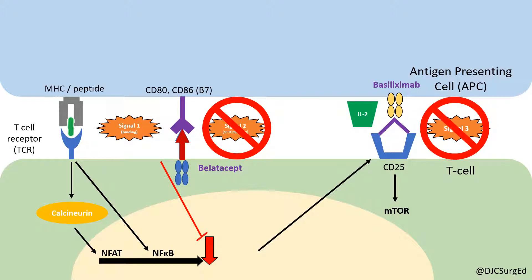Finally, leukocyte depletion strategies use antibodies such as thymoglobulin, which are designed to bind peripheral alloreactive lymphocytes and create a window of opportunity for an allograft to settle in.